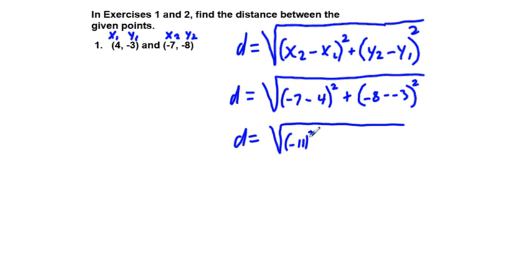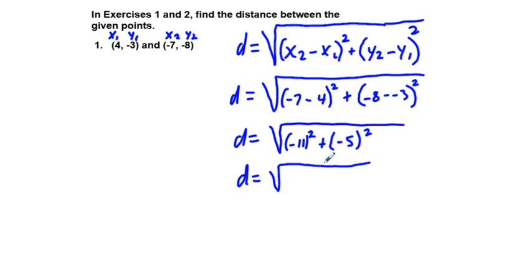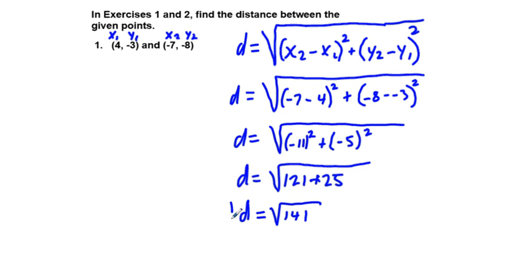So we get negative 7 minus 4, which is negative 11, squared, and negative 8 minus negative 3 is negative 5, squared. So d equals the square root of 121 plus 25, giving us d equals the square root of 146 — just a little bit less than 12, since the square root of 144 is 12.